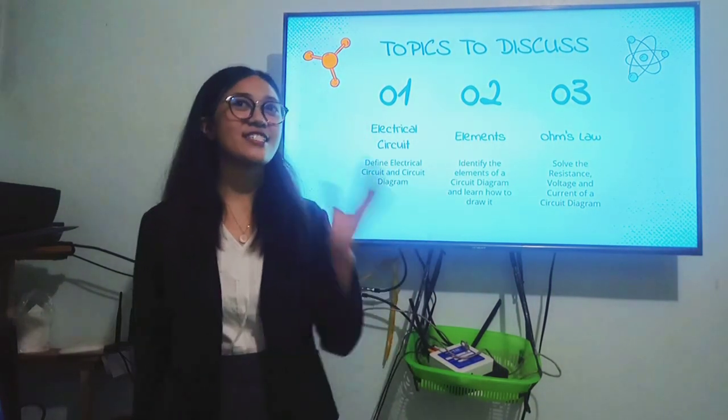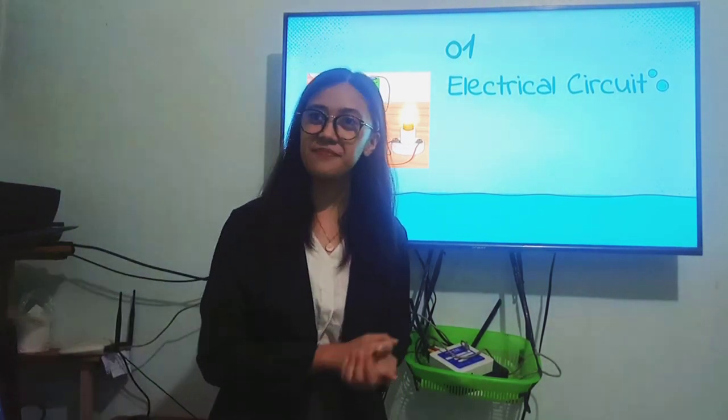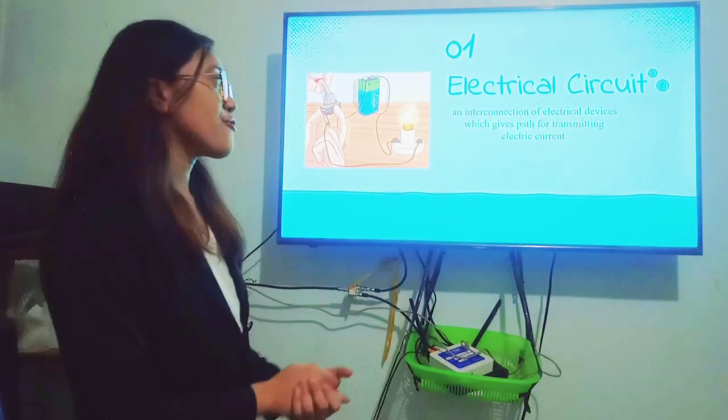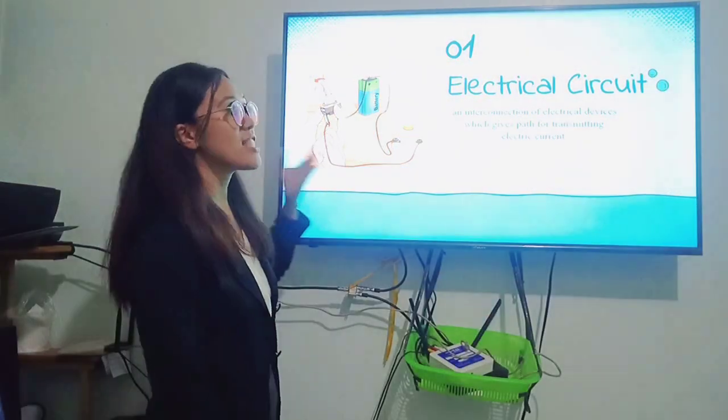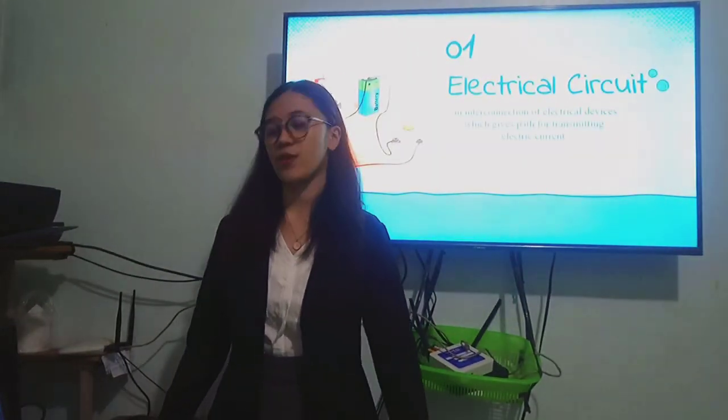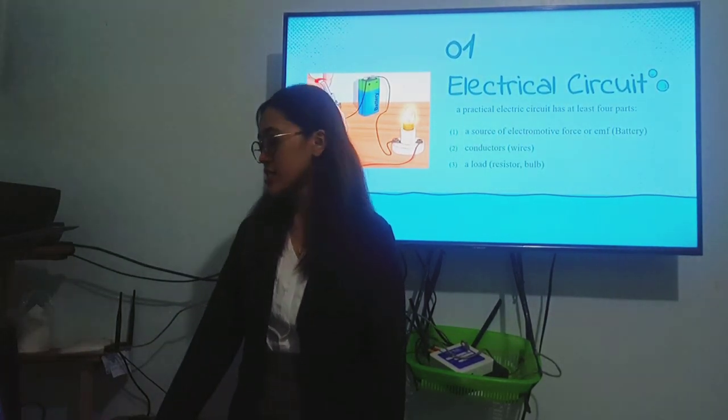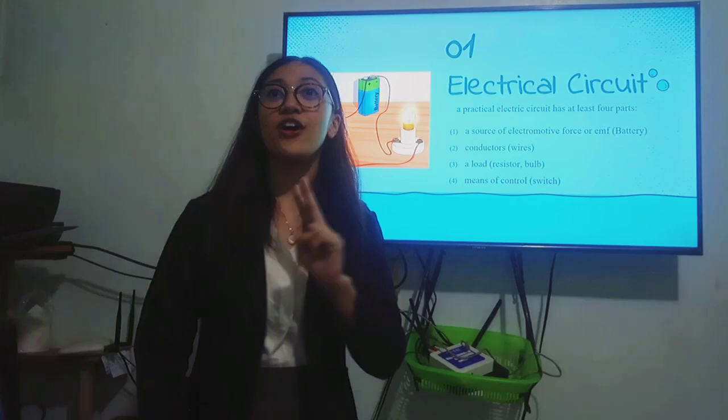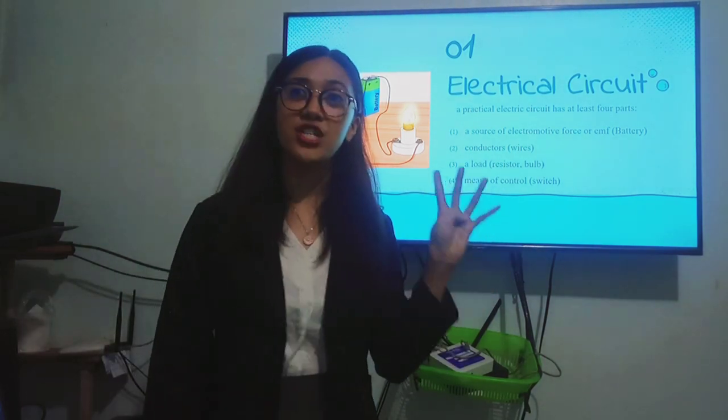Now let's go to the discussion. First, let us define what is an electrical circuit. It is an interconnection of electrical devices which gives path for transmitting electrical current. As you can see, this is an example of an electrical circuit. Have you seen one in real life? That's good that you have already seen this and you are familiar with this. Now, a practical electrical circuit has at least four parts. First is a source of electromotive force which is the battery. Next are conductors which are the wires. Next are loads which are resistors or bulbs.